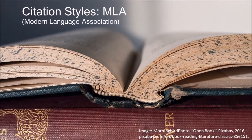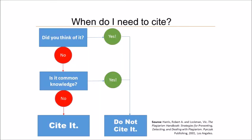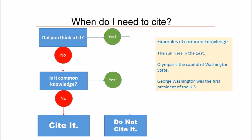The Modern Language Association style for citations is most commonly used to cite sources within the liberal arts and humanities, so a lot of instructors in English, literature, and art classes will ask you to create MLA citations. You'll want to be sure to cite any facts or ideas in your paper that you didn't think of yourself, unless they're common knowledge.